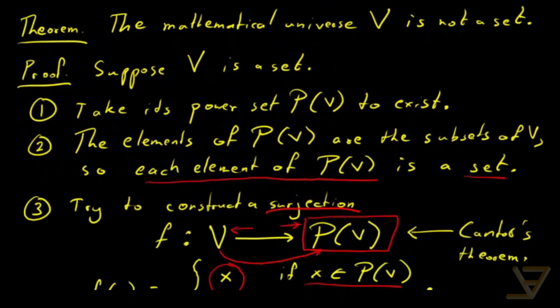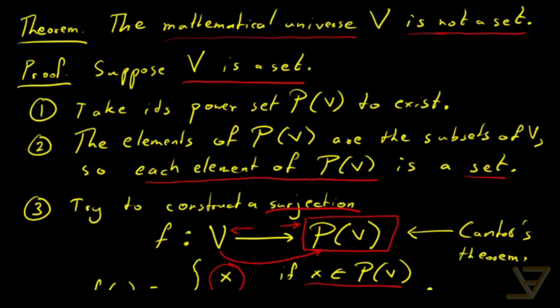What we wanted to prove is that the mathematical universe is not a set. Of course, we started by proving or rather assuming that V is a set. We took its power set which must exist.